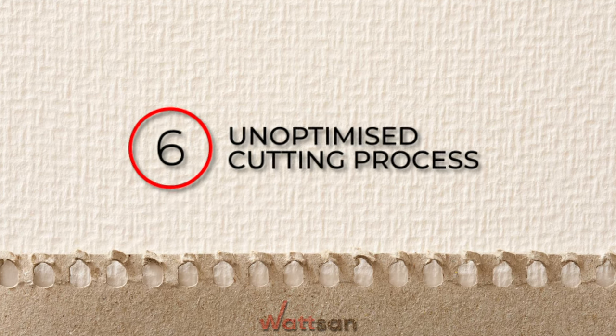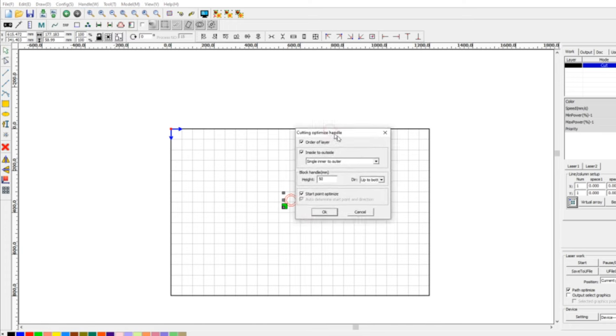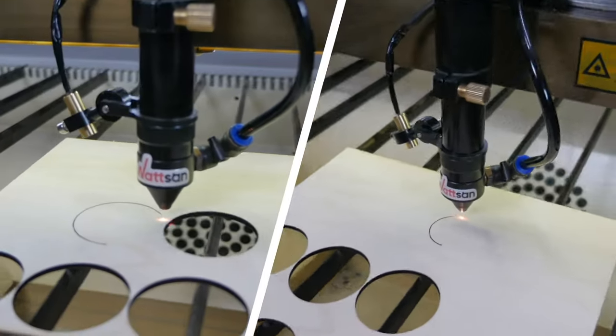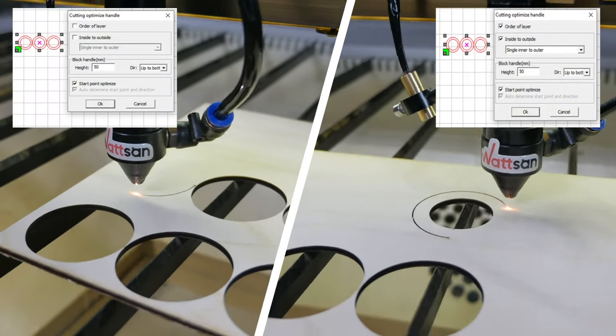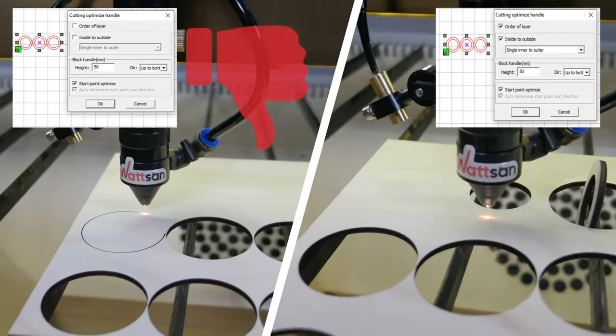6. Unoptimized cutting process. Optimization of the cutting process determines which lines and in what sequence the machine will cut. If you want to cut a pattern inside a circle, you must first cut the pattern and then the circle. If you do not adjust the optimization and cut the circle first, it will fall off and the cuts inside will not match.